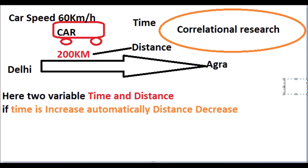In this picture you can see Delhi to Agra — suppose the distance is 200 km. I started from Delhi towards Agra. As my car moved from Delhi to Agra, if time is increased, automatically the remaining distance is decreased. That means time and distance are dependent on each other — if time is increased, distance is automatically decreased.